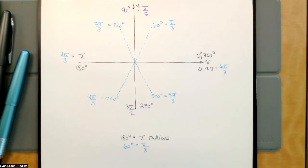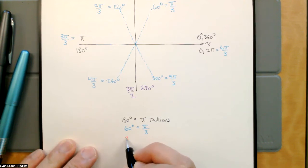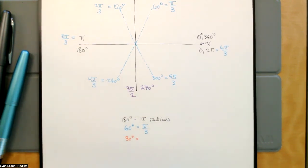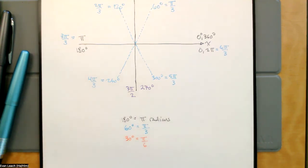Then what we want is our 30-degree reference angles. We're going to convert 30 degrees into radians, and then count around the unit circle in 30 degrees and then in multiples of the radian version. 30 degrees is half of 60, so there's 30 degrees. If I take pi over 3 and cut that in half, that's just pi over 6. If you want to cut a fraction in half, double the denominator — doubling the denominator cuts the fraction in half.